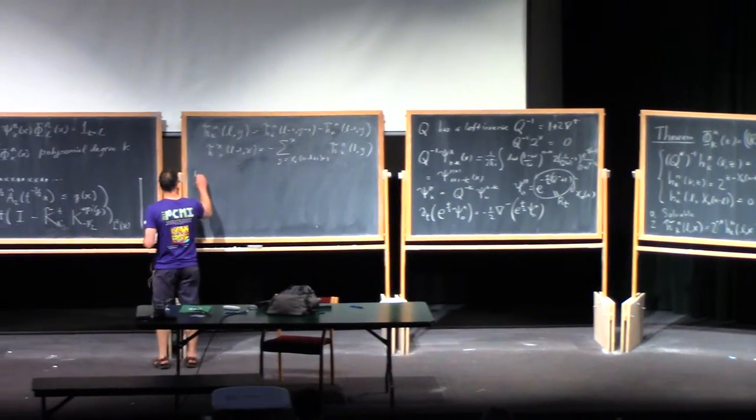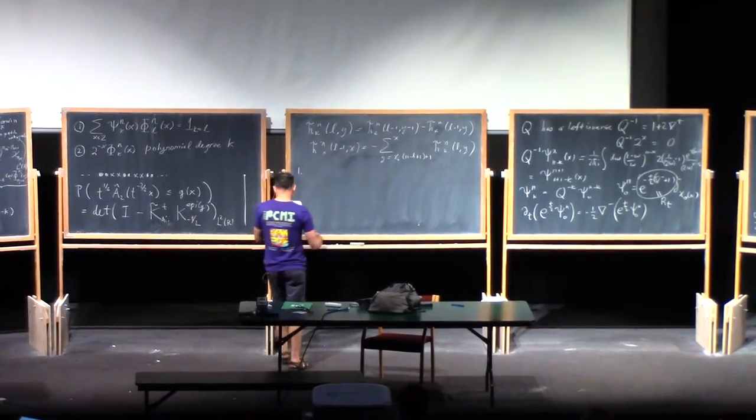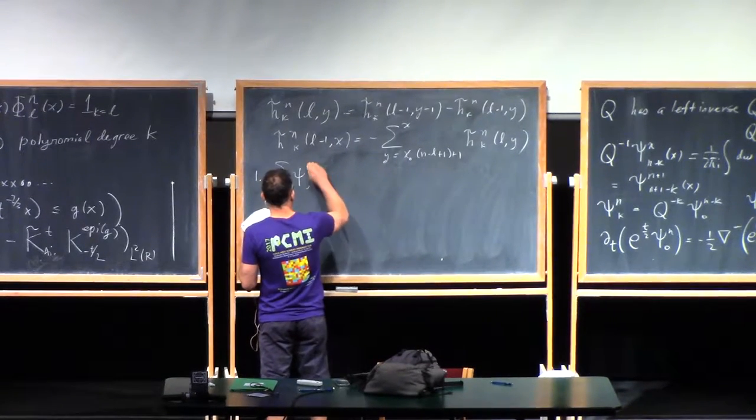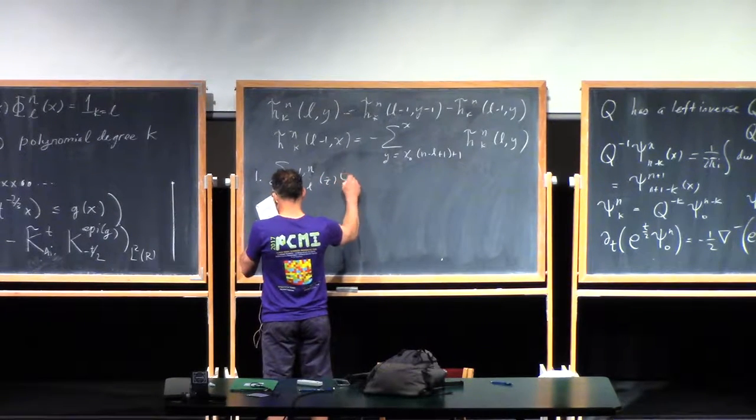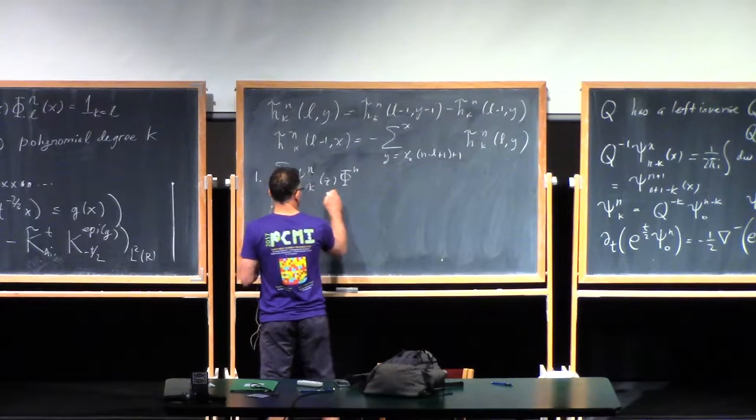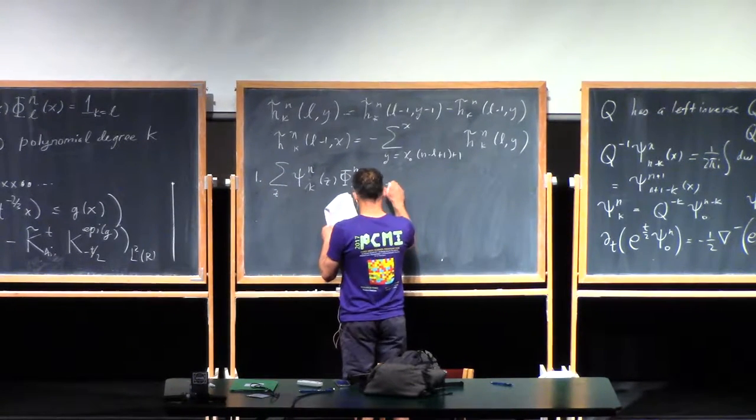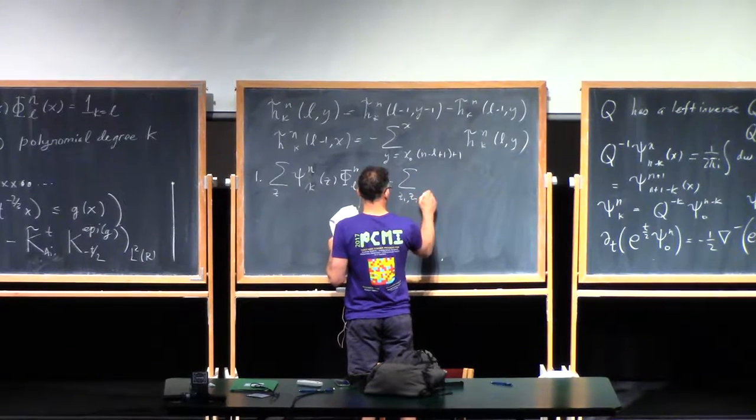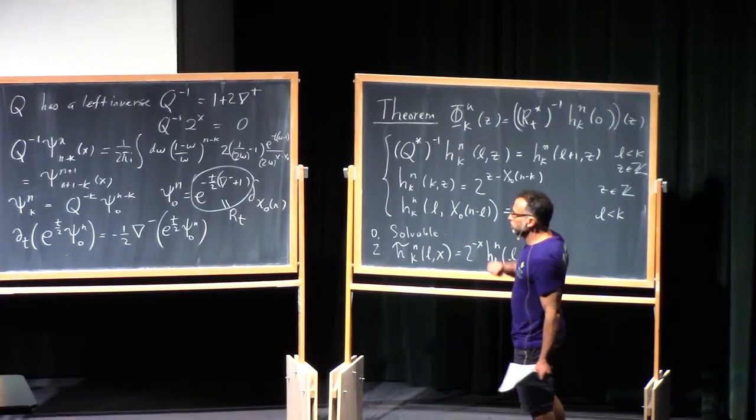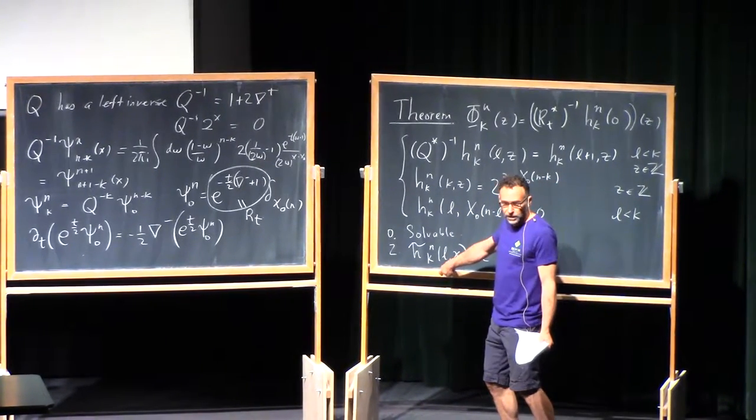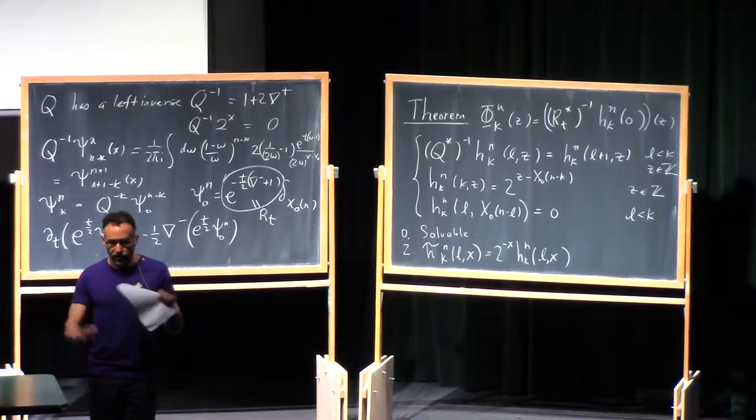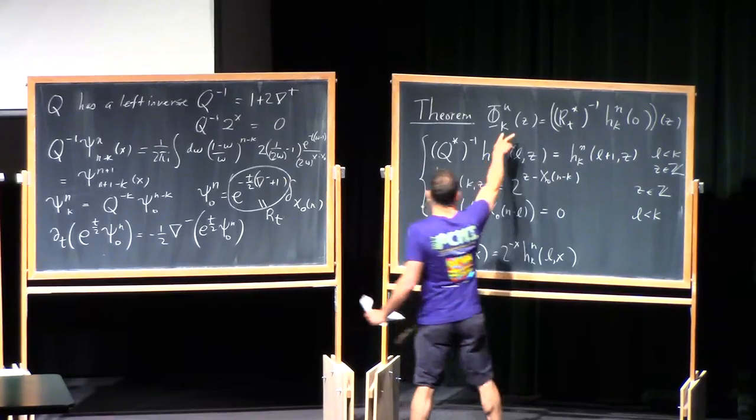So now we have to prove 1. This is really fun. Sum over z, psi n l z phi n k z equals the sum. By the way, I said it proves 2, but it proves that this guy is a polynomial of the right degree. But then this is just a convolution with shifts of the thing. So of course that becomes a polynomial of the same degree. That's easy to see. So that proves these guys are actually polynomials of the right degree.